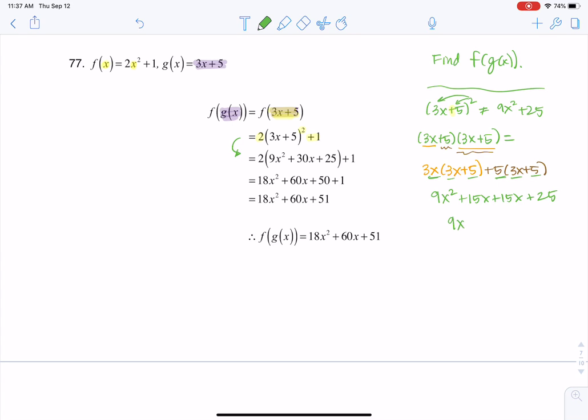So this is ultimately 9x squared plus 30x plus 25. So that's why you see this answer showing up here. And then you can see from this step to this step, I distributed the two and collected some like terms, and there's my answer for f of g of x.